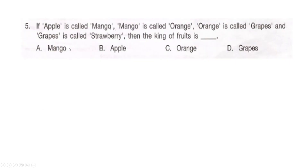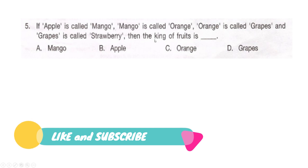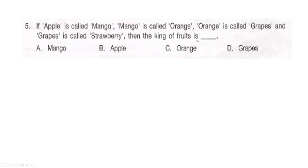Next question: If apple is called mango, mango is called orange, orange is called grapes, and grapes is called the king of fruits — this is tricky! What is the king of fruits? Is it option A: mango, option B: apple, option C: orange, or option D: grapes? Your time starts now.